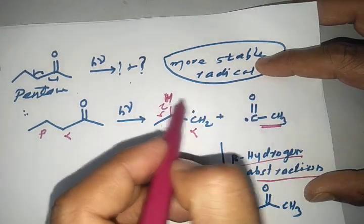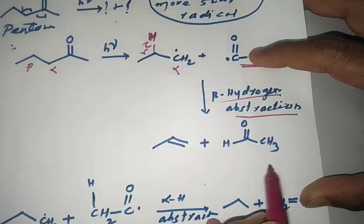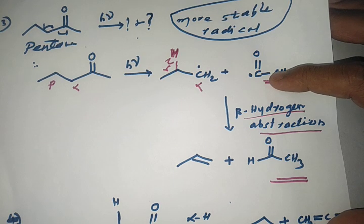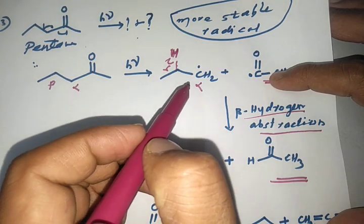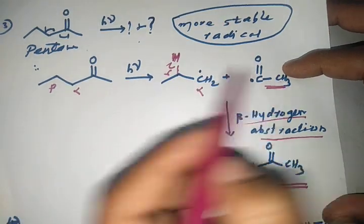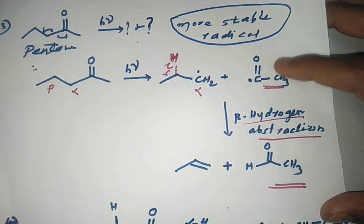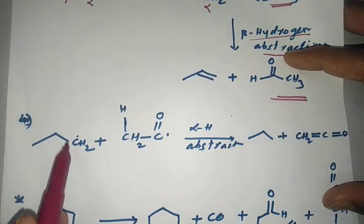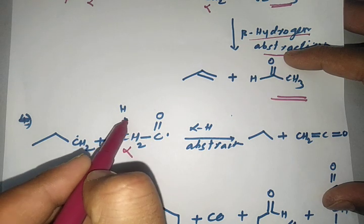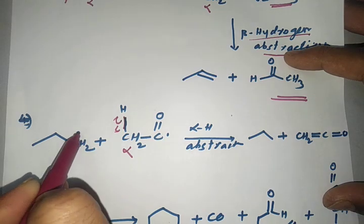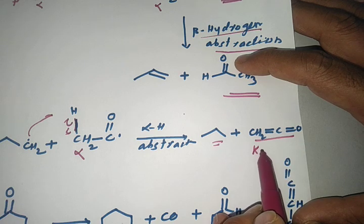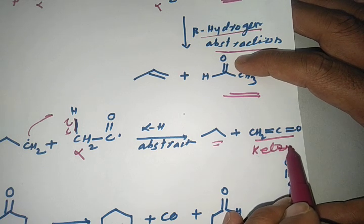There are two beta hydrogens on this carbon. Under homolysis, this hydrogen is taken by the acyl group, forming an aldehyde and an alkene — demonstrating beta hydrogen abstraction by the acyl radical. In a second pathway for pentan-2-one: the n-propyl radical undergoes alpha hydrogen abstraction from the acyl radical, resulting in the formation of propane and ketene.